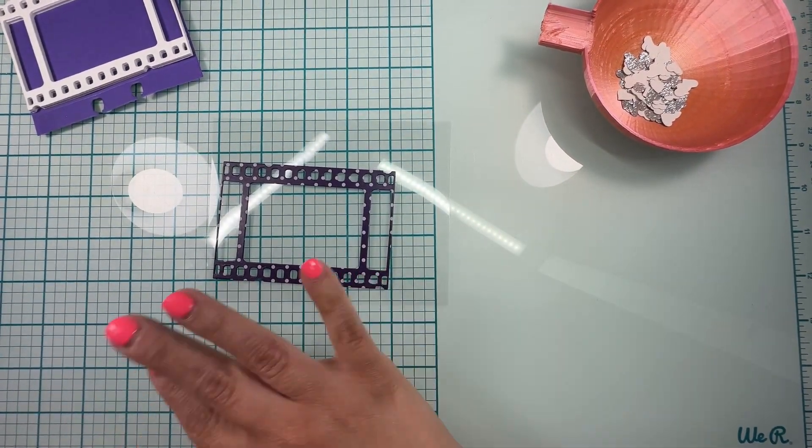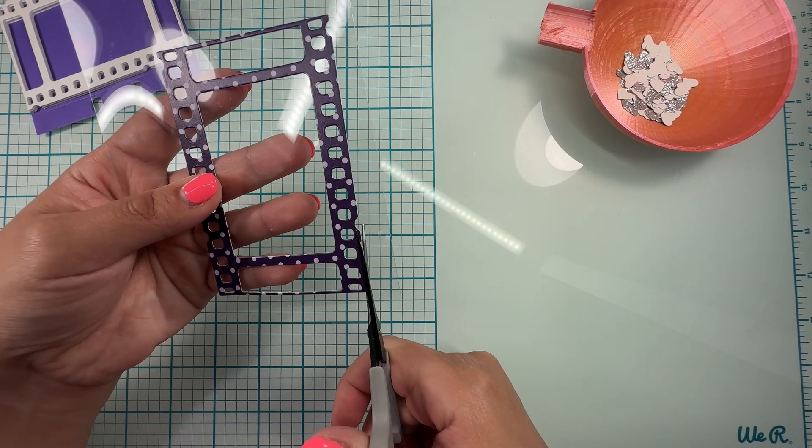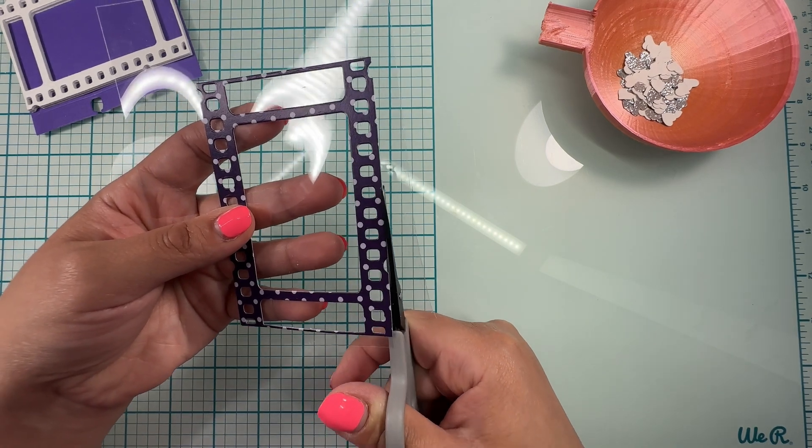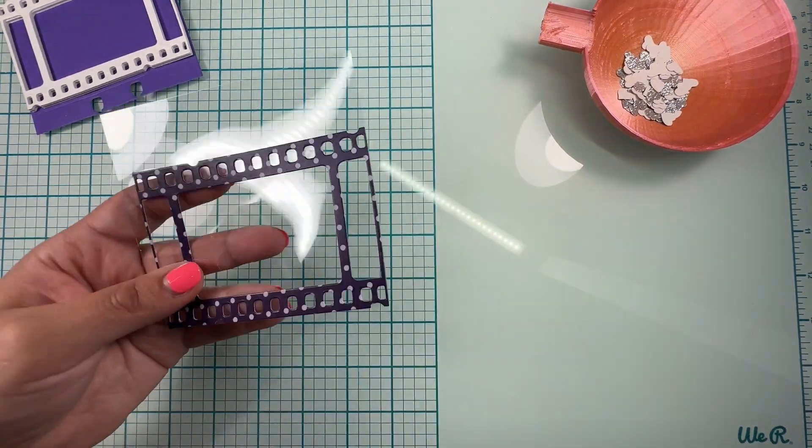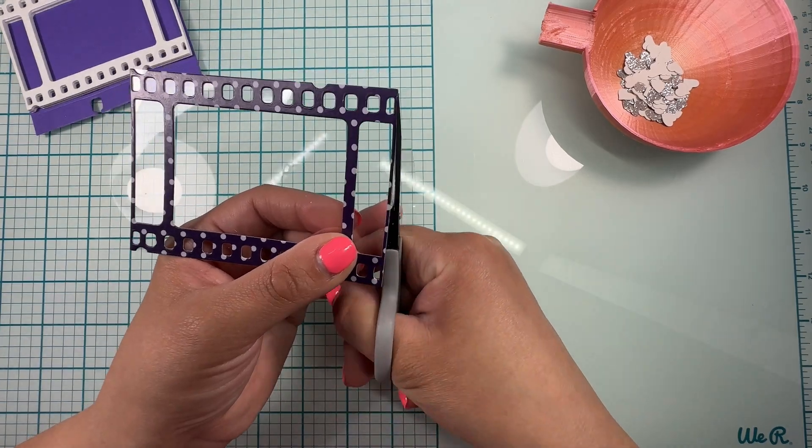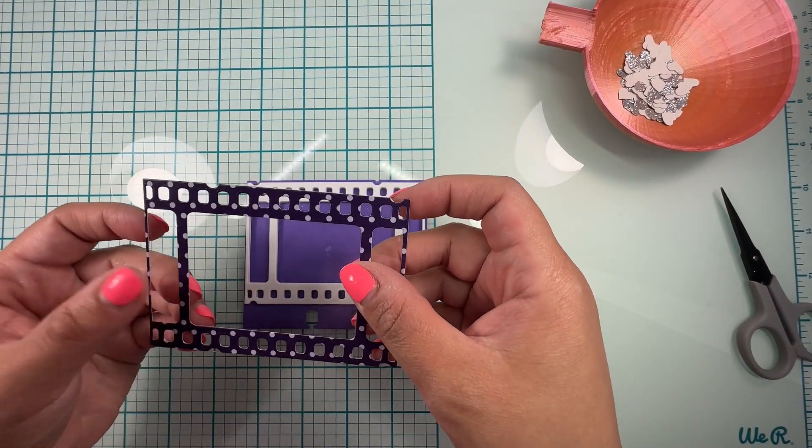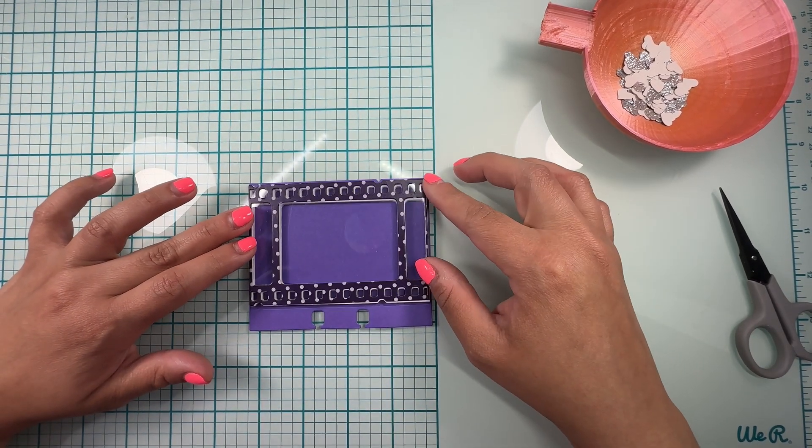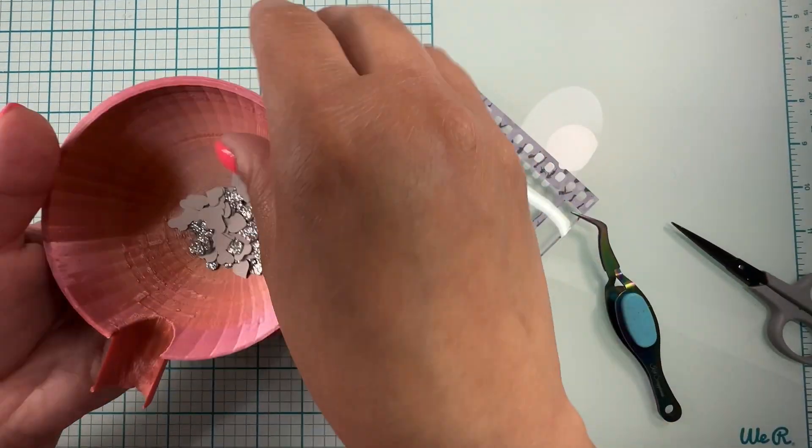And I'm just gonna let this dry before I do anything else. So now that this has dried, I'm just gonna cut along the edge. And all we have to do here is just glue it here.